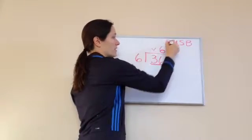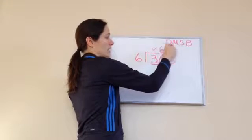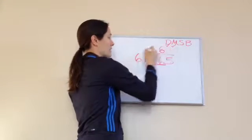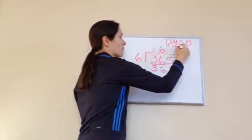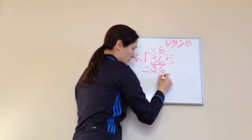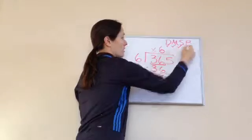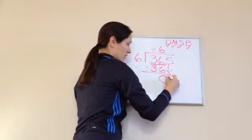So I divided, 6 will go into 36, 6 times. Now I'm going to multiply, 6 times 6 is 36. Good job. I'm going to subtract, 0, and I'm going to bring down.